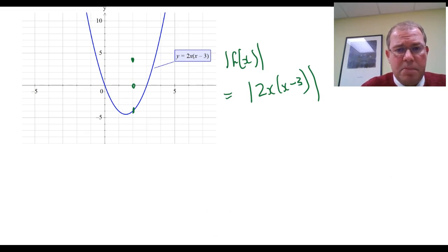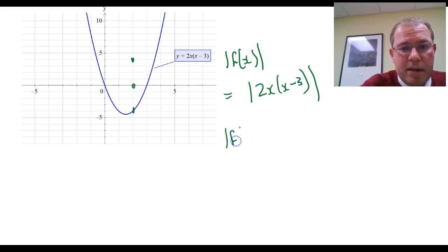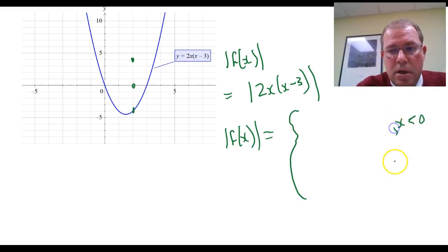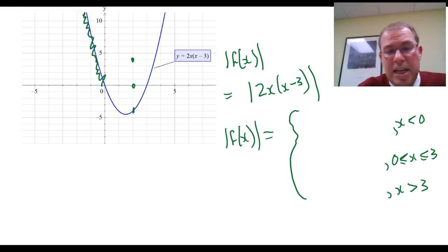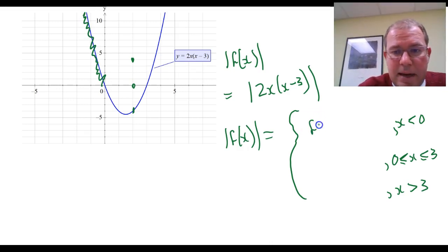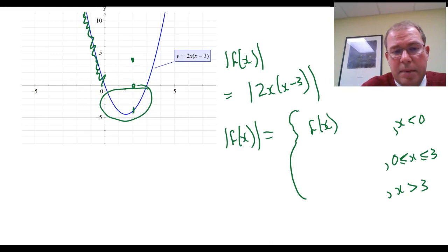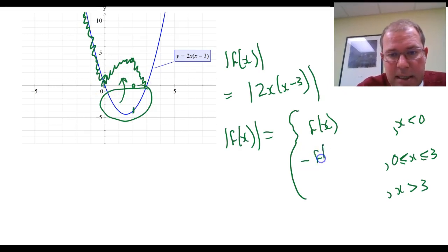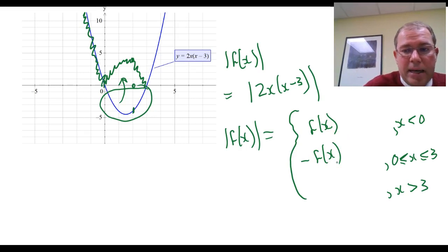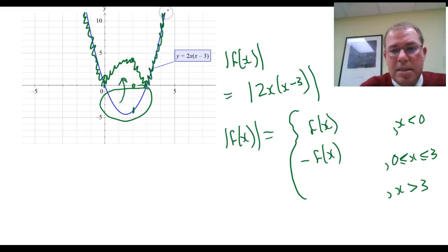If we want to write the absolute value of f of x as a piecewise function for this particular function, we clearly have three parts: x less than 0, 0 less than or equal to x less than or equal to 3 (including 0 and 3), and x greater than 3. When x is less than 0, the y values are all positive, so taking the absolute value makes no difference — it stays the same as f of x. However, between 0 and 3 the y values are all negative, so when you take the absolute value they get reflected in the x-axis, giving minus f of x. For x greater than 3, the y values are again all positive, so it remains the same as f of x.